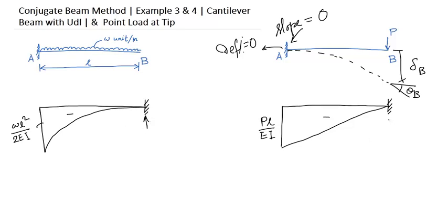So the shear force at this position is nothing but the total load. So you have to calculate the area of this total load. That will be the reaction at B and it will be equal to the slope.